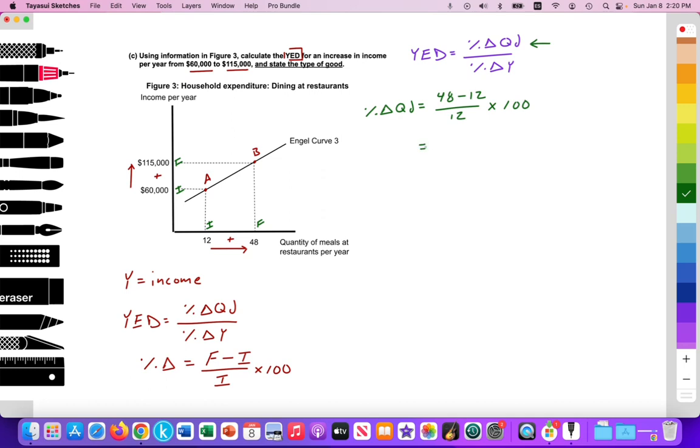All right. So 48 minus 12 is 36. Divided by 12. That's going to equal 3. Multiplied by 100. And that equals a 300% increase in consumption. So here, the change in consumption is 300%. 300% increase in consumption.